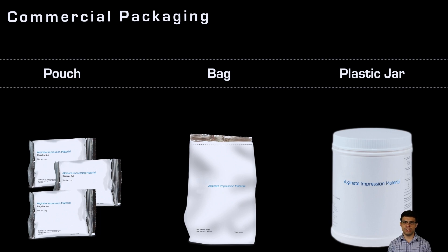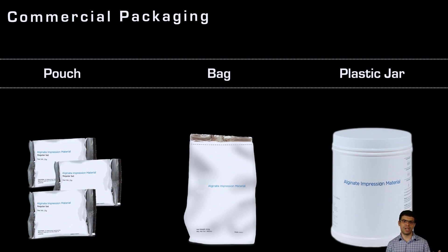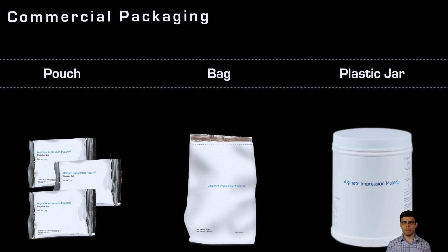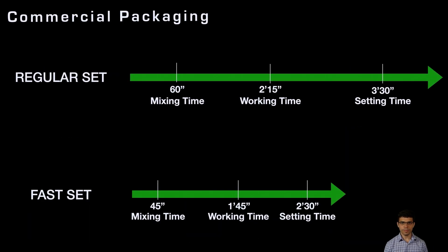You can have regular set and fast set alginate. You'll very likely use regular set in school. Fast set is useful if you're doing mainly preliminary impressions — it's great for pediatric dentistry and orthodontics. The pouches can be more expensive and may come in three-dose packs when you don't always need that much. If using a bag, I recommend putting the content into a plastic jar so you can control the amount and close the lid to prevent humidity, since premature setting is a risk.